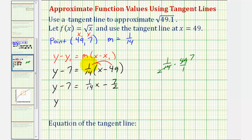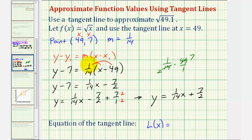Adding 7 to both sides: y = (1/14)x − 7/2 + 7. Using a common denominator of 2, we multiply 7/1 by 2/2 to get 14/2. So −7/2 + 14/2 = 7/2. The equation of our tangent line is y = (1/14)x + 7/2, which we'll call L(x) = (1/14)x + 7/2.